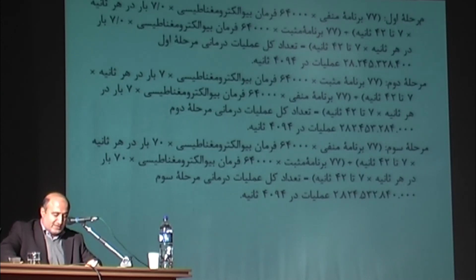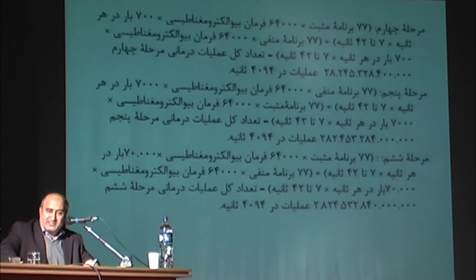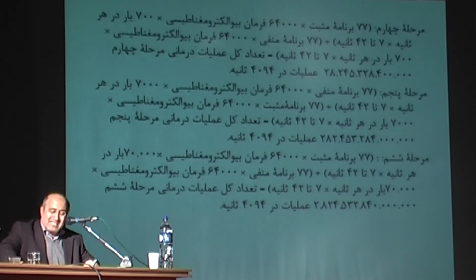Phase 4: 77 positive programs multiplied by 64,000 bioelectromagnetic commands multiplied by 700 times per second multiplied by 7 to 42 seconds, plus 77 negative programs multiplied by 64,000 bioelectromagnetic commands multiplied by 700 times per second multiplied by 7 to 42 seconds, equals a total number of fourth phase treatment operations of 28,272,822,840,000 in 4,094 seconds.